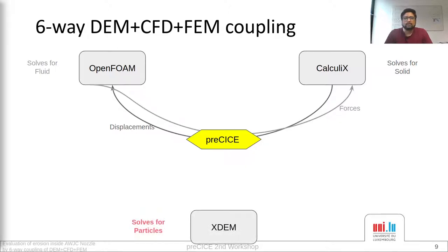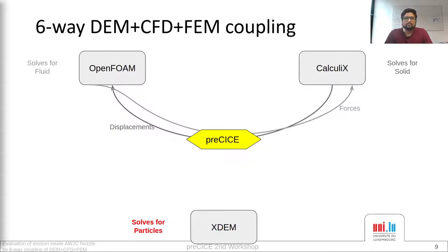Here, to extend the 2-way case to the 6-way case, we add XTM which solves for the particle motion. For the XTM coupling, PreCICE does not see the particles directly. Instead, XTM does the work of converting the DEM objects — which are particles and walls — into mesh or data that can be dealt with by PreCICE, such as volume fields like porosity and surface fields like surface forces.